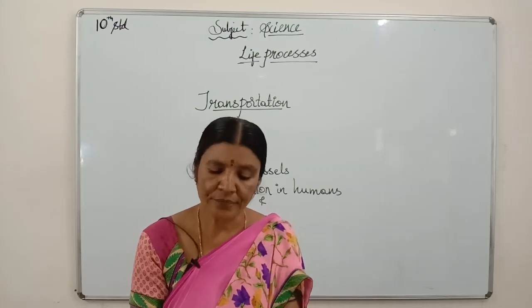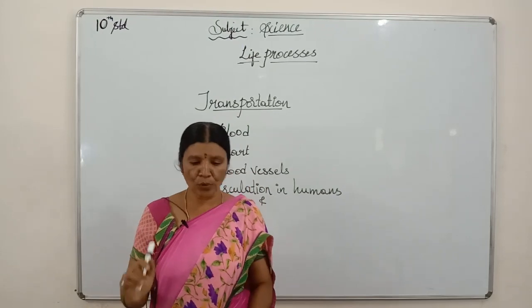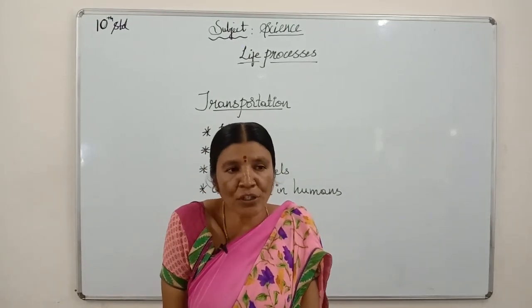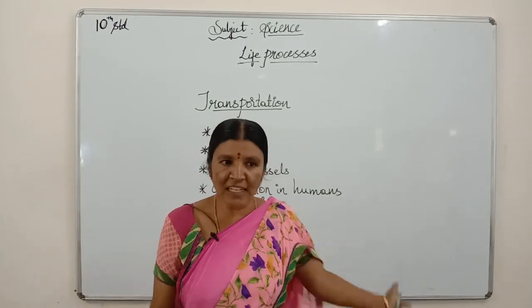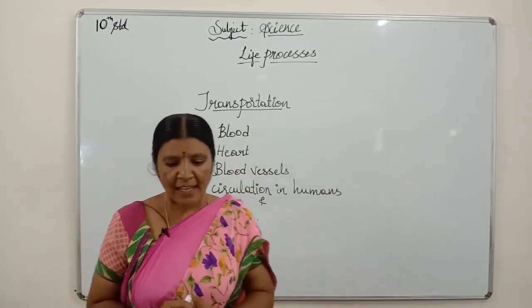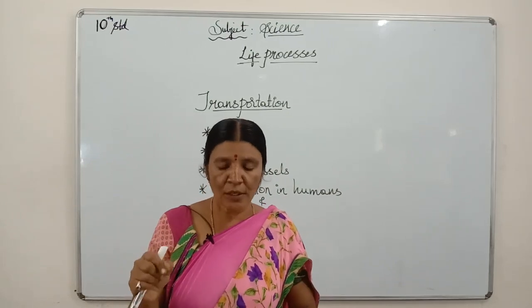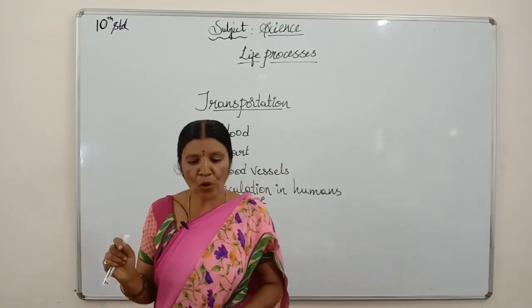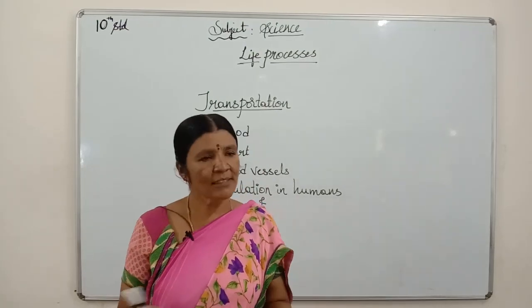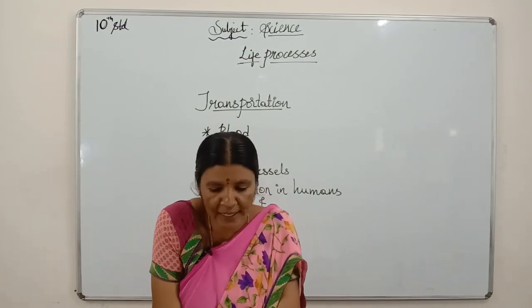Now we shall learn how oxygen and glucose are transported throughout our body. Our body requires glucose and oxygen for the production of energy, as we have seen in respiration. The cells use oxygen to break down glucose to produce energy. That is what we call respiration.